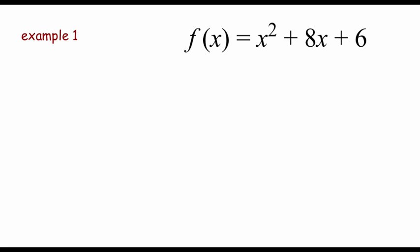In this example we've got f of x equals x squared plus 8x plus 6, and I'm going to go through the completing the square process to rewrite this in standard form. One thing we need to make sure before we start is to look at the a value on our x squared — for completing the square to work we need that a value to be a 1. On this one we already have an a value of 1 so there's no extra work needed.